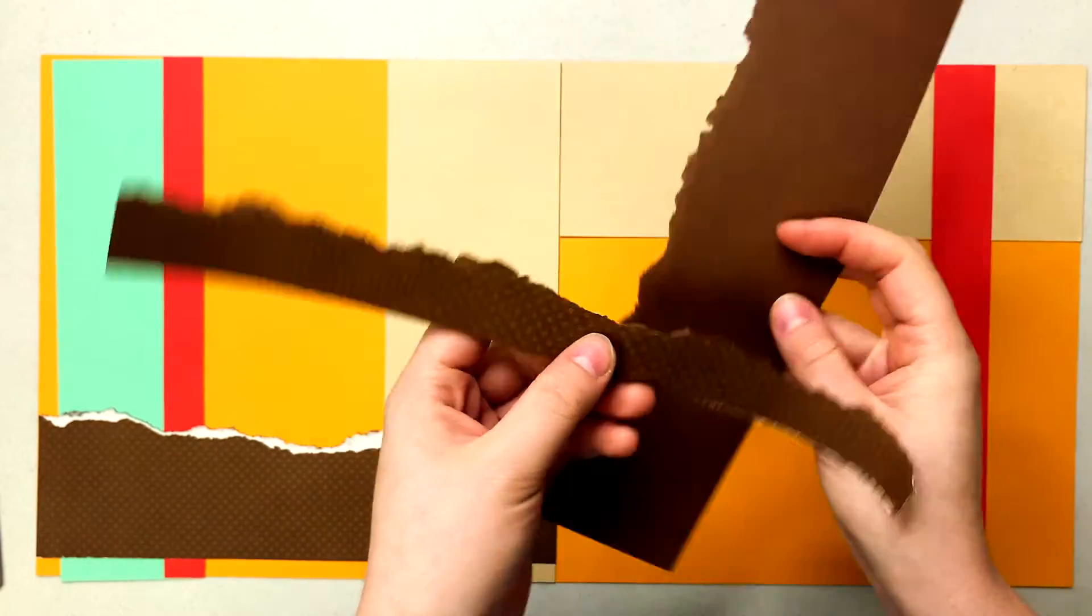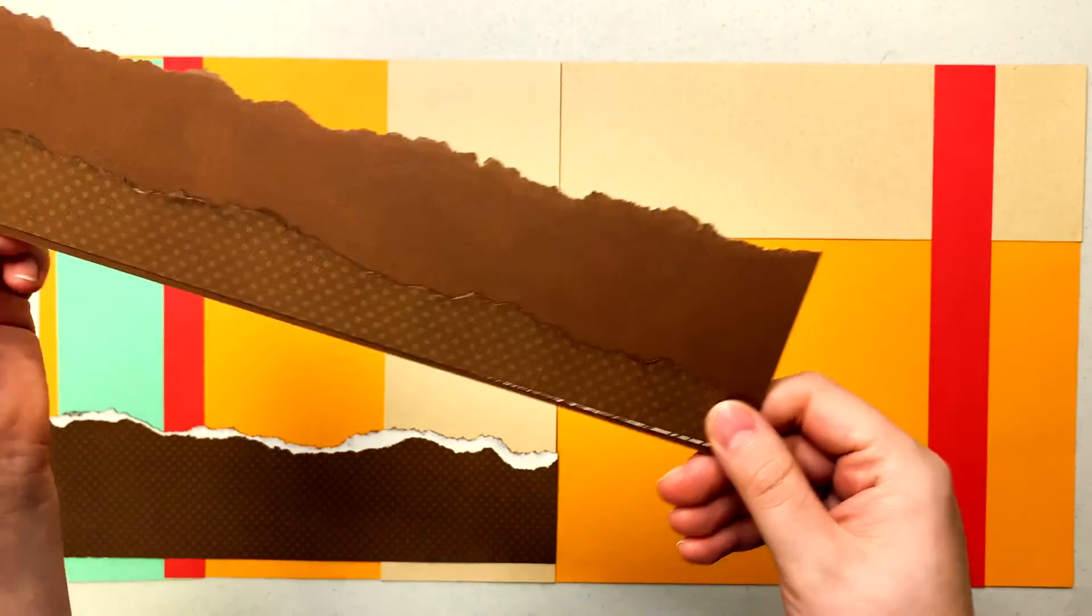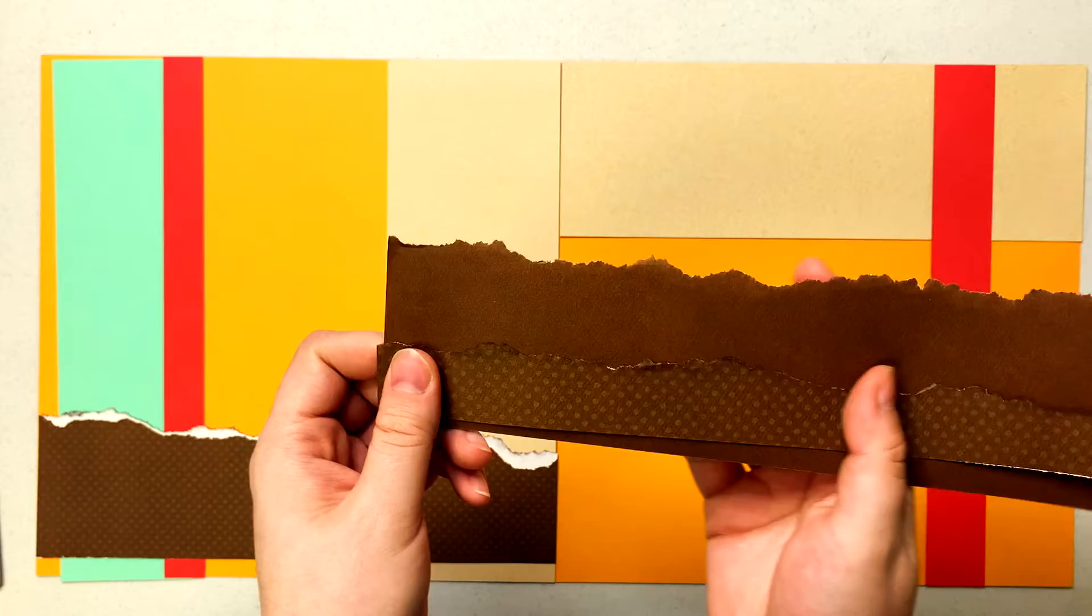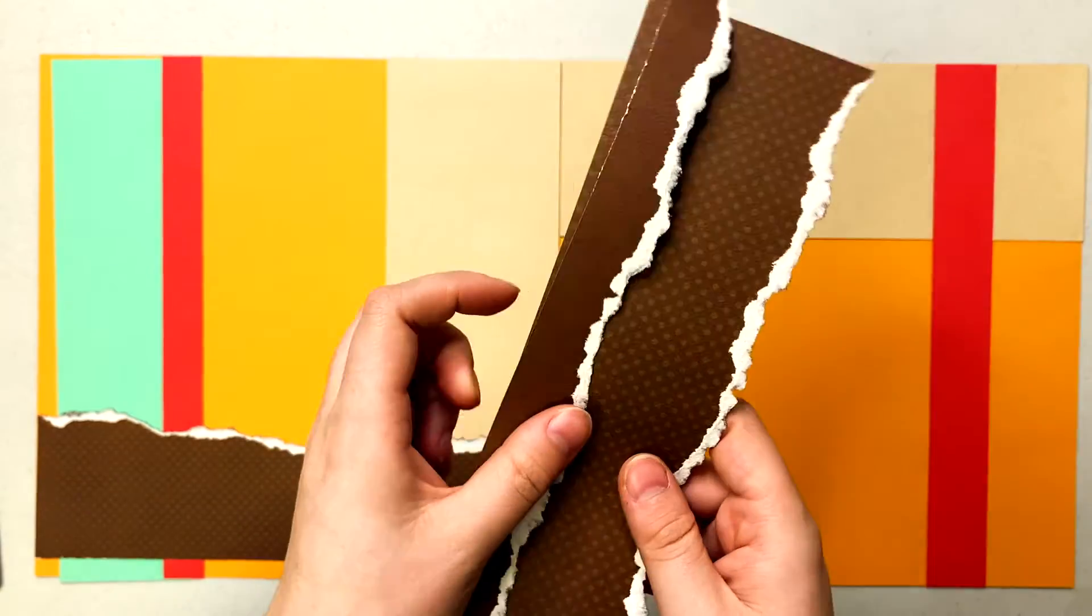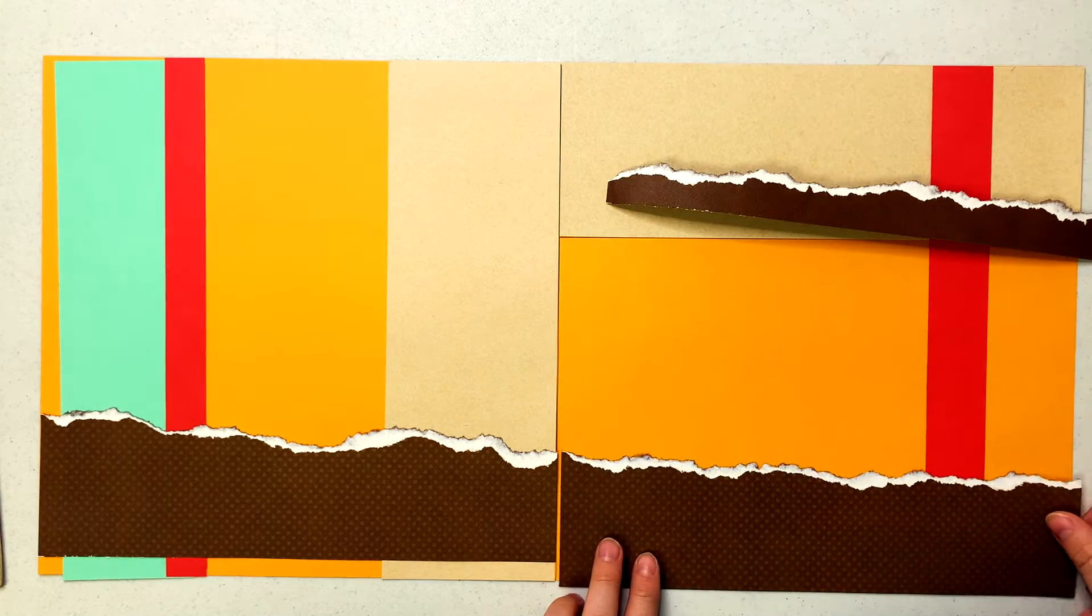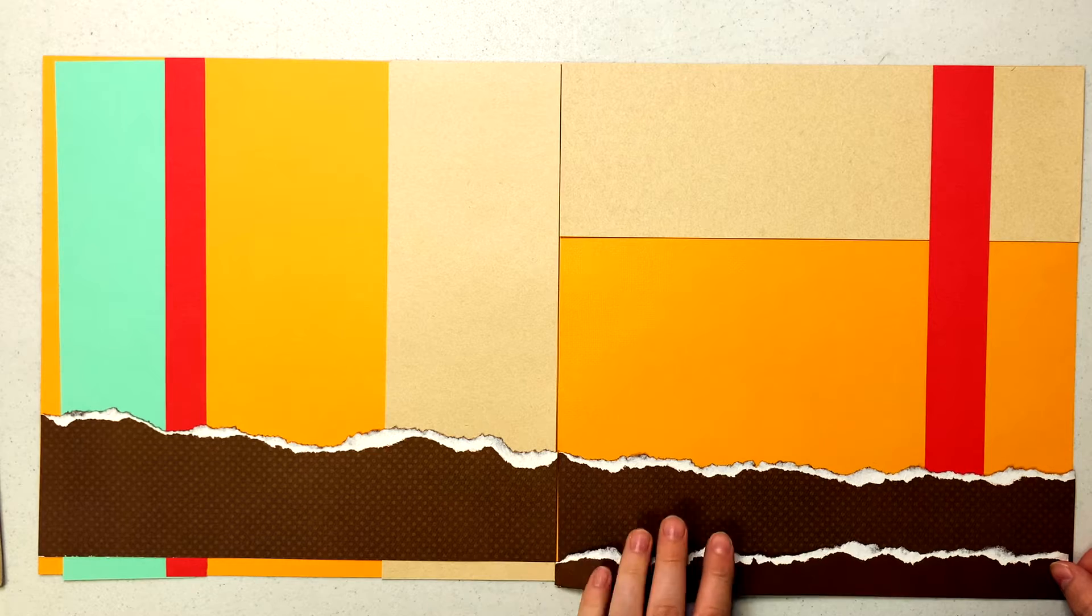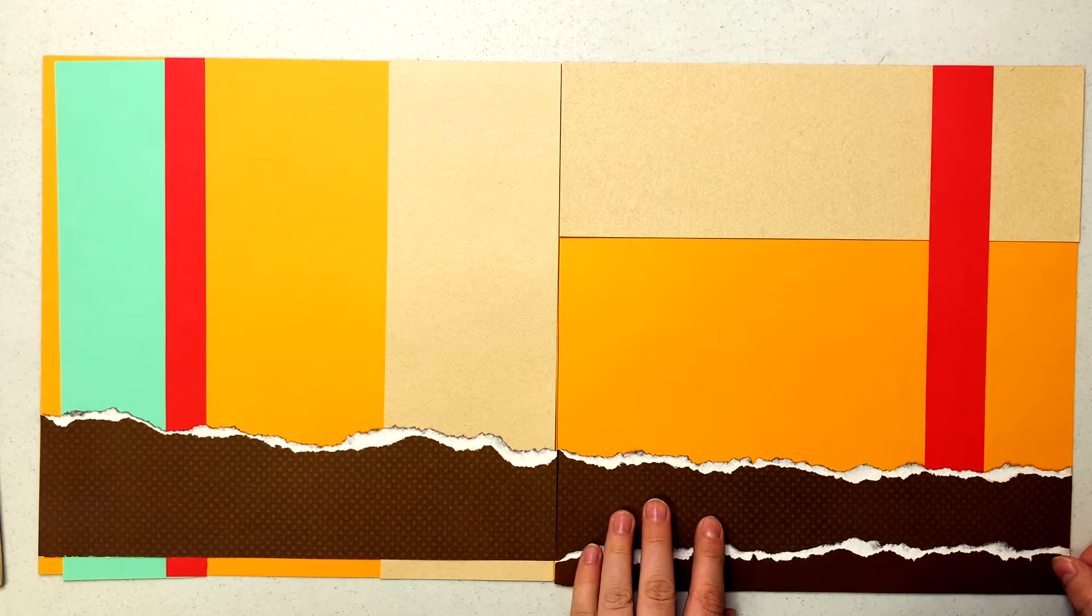You could use ripping like this where you don't see any of the white but you can still see that texture that it creates, or you can use it with the white side. So what I'm going to be doing today is I wanted to use the white side. I think it adds just another layer of texture.